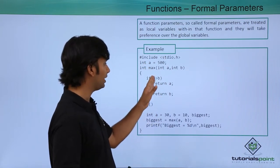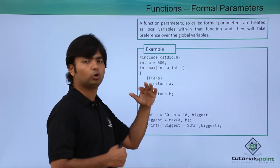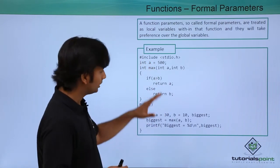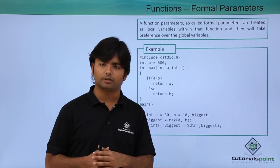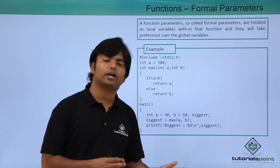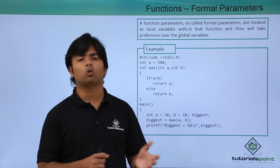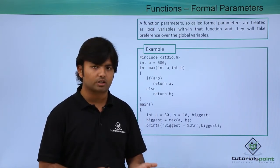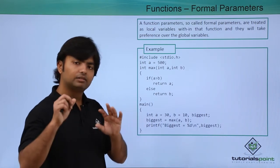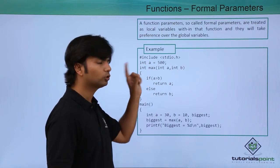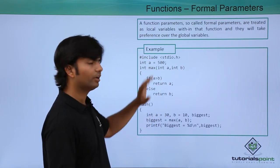Again when you say a, it will not consider this external or global definition of a, but the local copy will be considered. But if in case you have another method in the same program inside which you don't have any local variable or formal argument with the name a, then that particular method will be using this global variable a with the value 500.